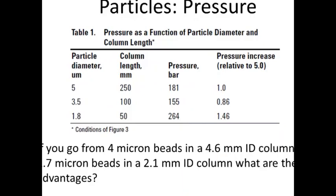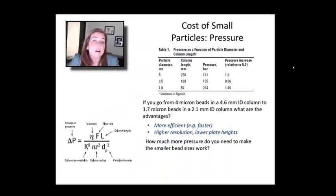So in this example, if you go from a four micron bead in a longer column to smaller beads in a shorter column, what are the advantages? Well, you get a more efficient and faster separation with higher resolution between peaks, or better resolution rather, and lower plate heights.